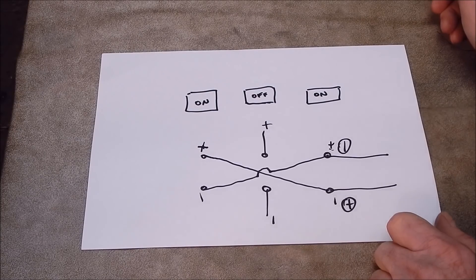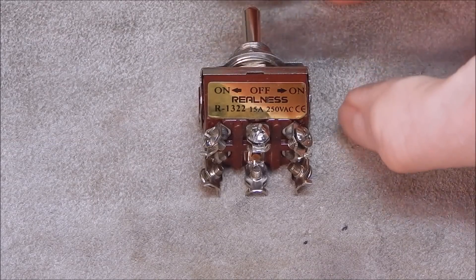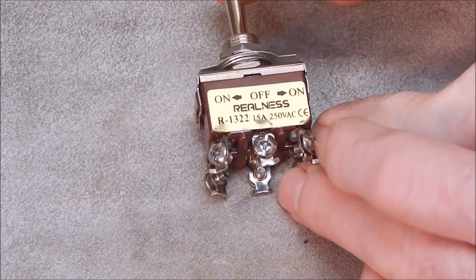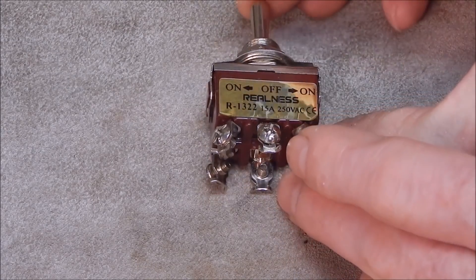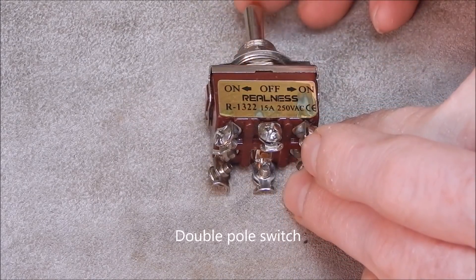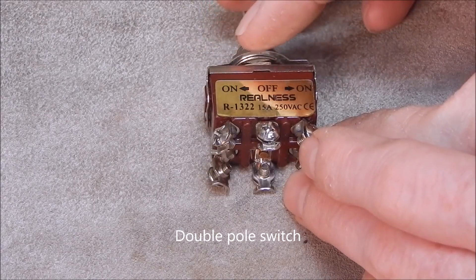So here's the switch, and you can see the specification on it: 250 volt, 15 amp. This will easily handle a treadmill motor, no problem.